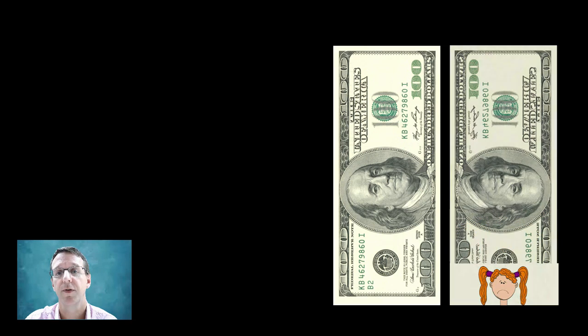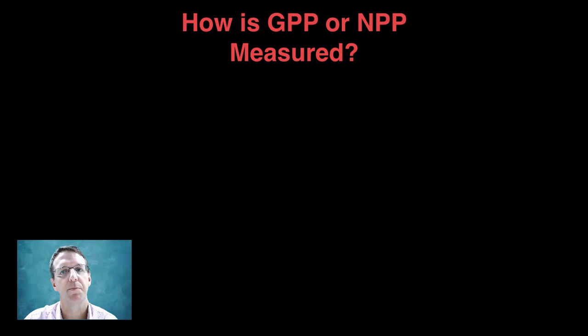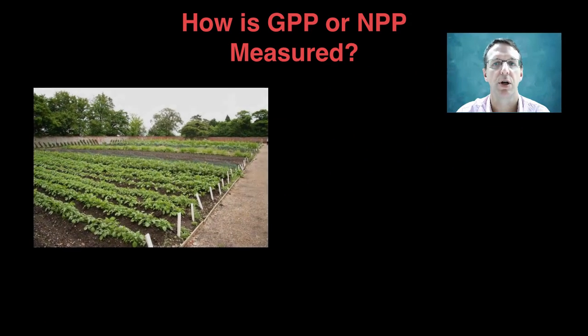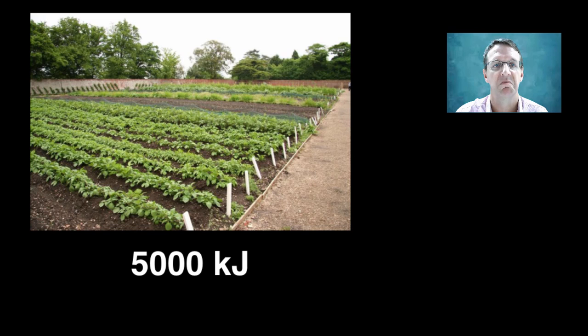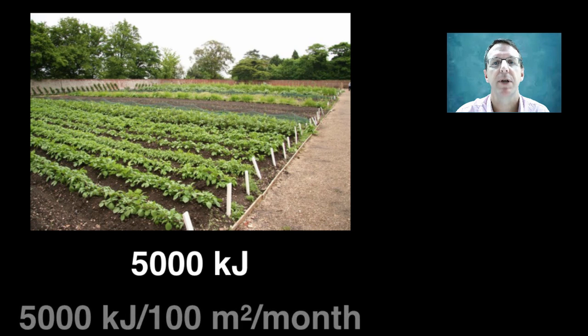And yes, just like in real life, those values vary in different ecosystems. Now that we know what GPP and NPP are, how do you actually measure this? Well, first of all, we need to understand that both of these are reported in terms of the quantity of energy per unit area, per unit time. So for example, it makes little sense to say that your backyard garden has a GPP of 5000 kilojoules. How big is your garden? How long did it take the garden to do it? This needs to be reported as something like 5000 kilojoules per hundred square meters per month.